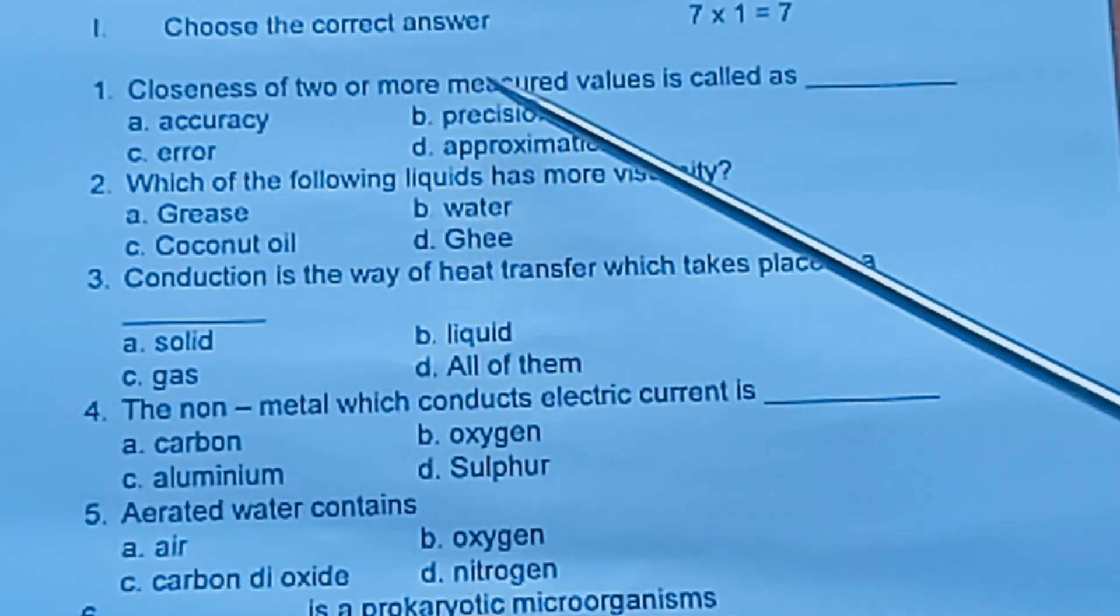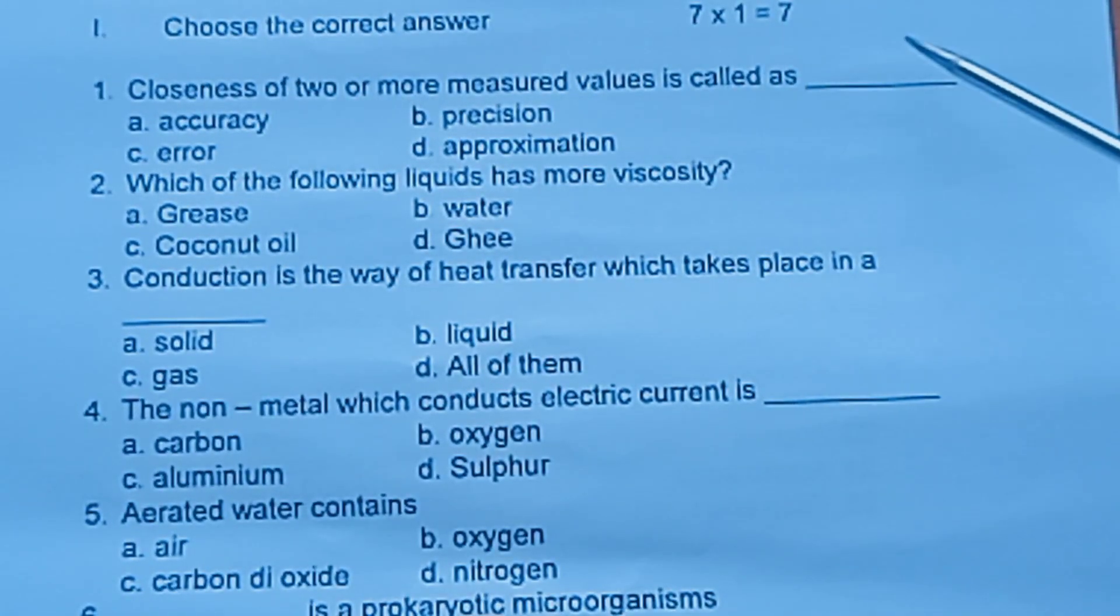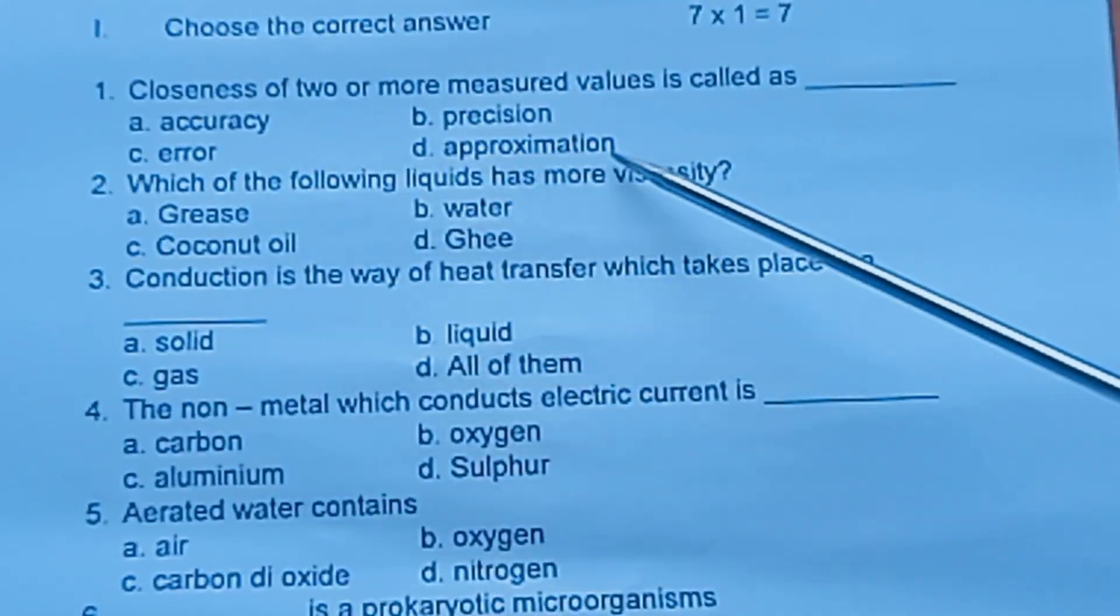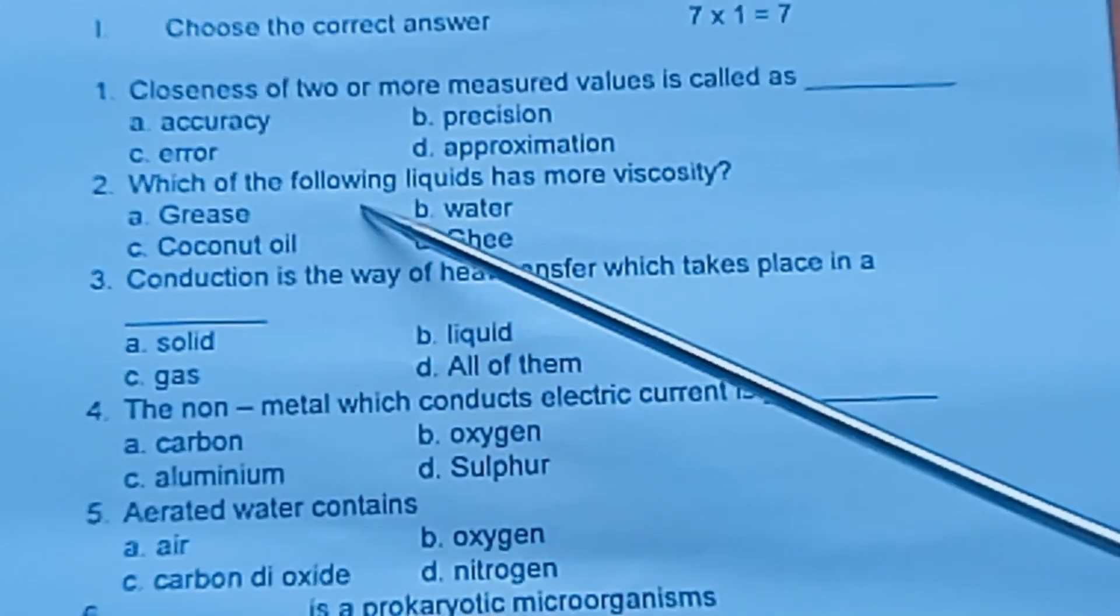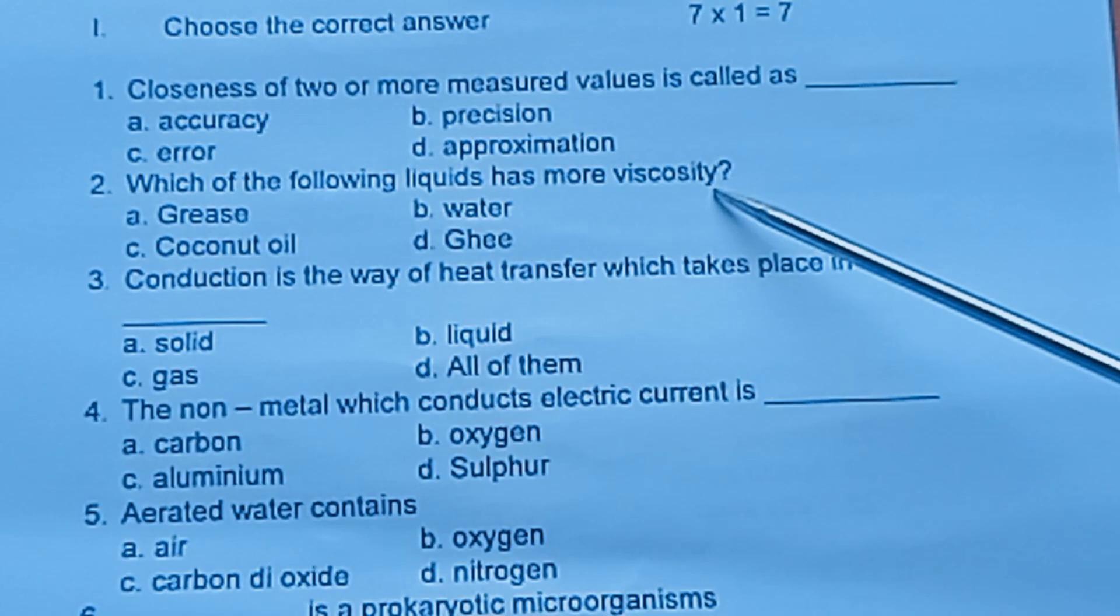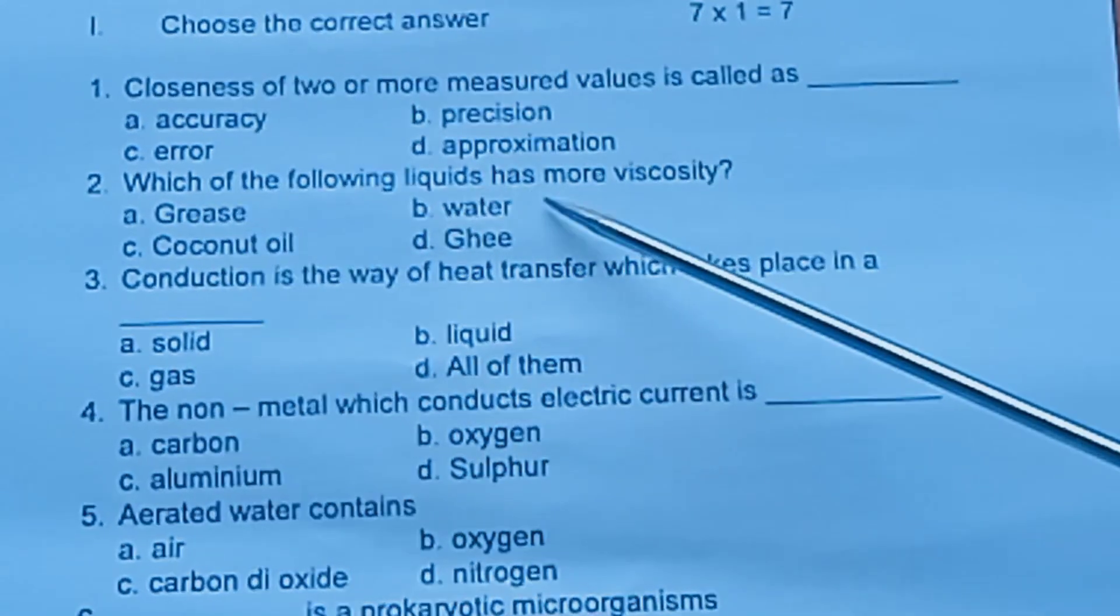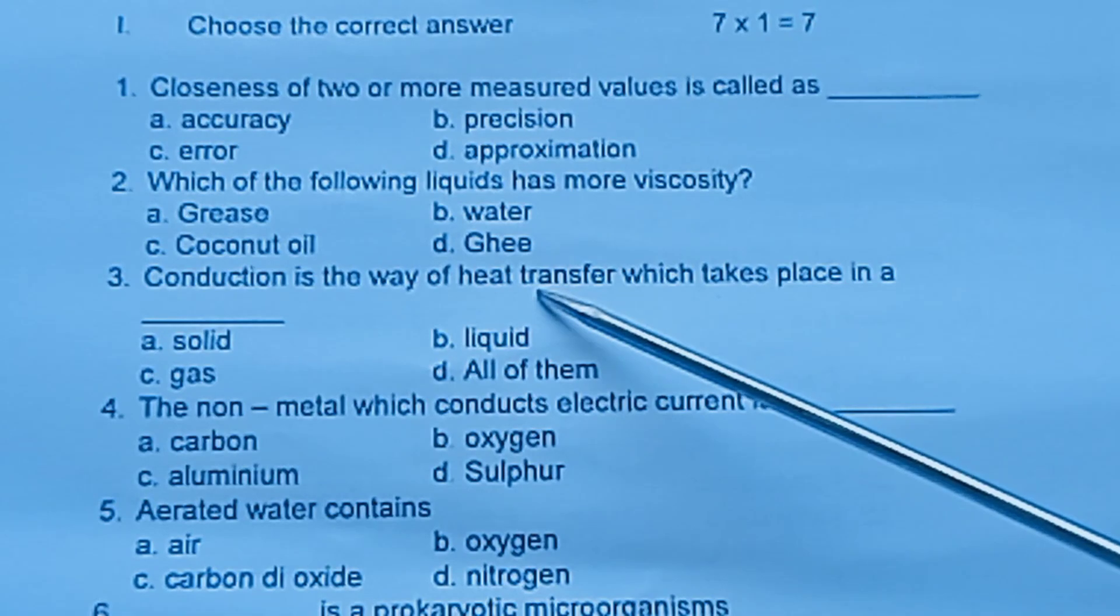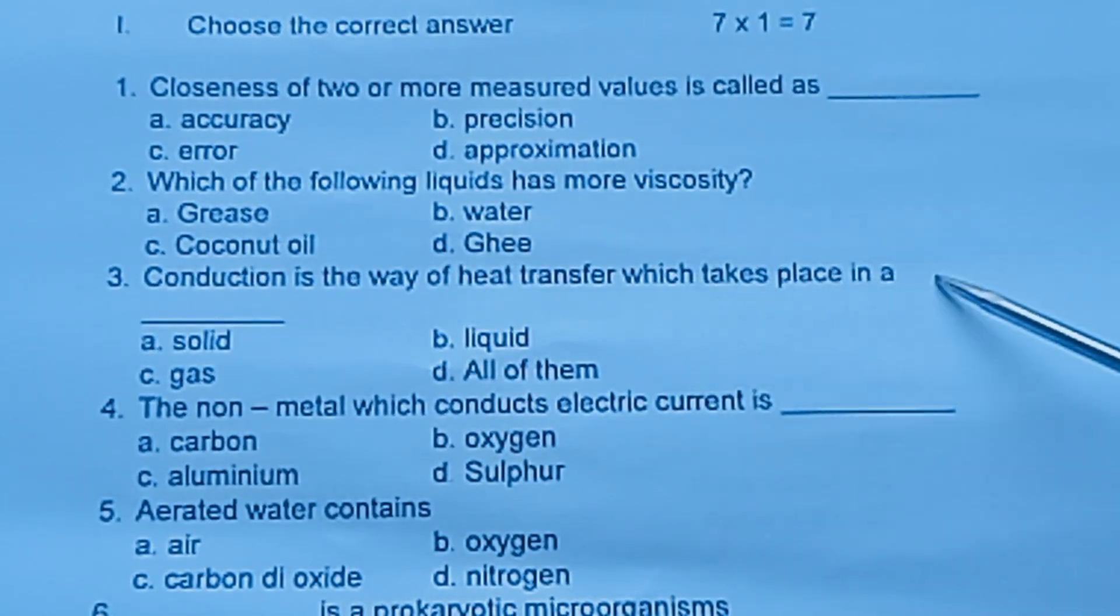Question 1: Closeness of two or more measured values is called as - accuracy, precision, error, or approximation. Question 2: Which of the following liquid has more viscosity - grease, water, coconut oil, or ghee?